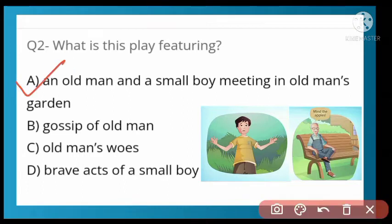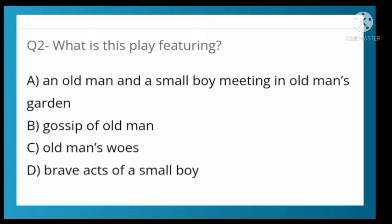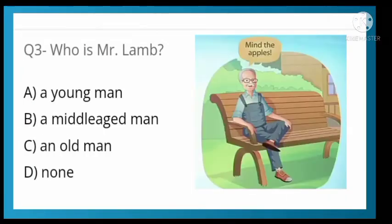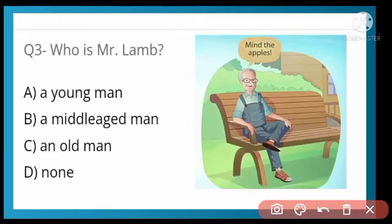Who is Mr. Lamb? Mr. Lamb is the main character of this play. Options: a young man, a middle-aged man, an old man, or none. Option C is correct — Mr. Lamb is an old man who has a garden and he lives in his garden.